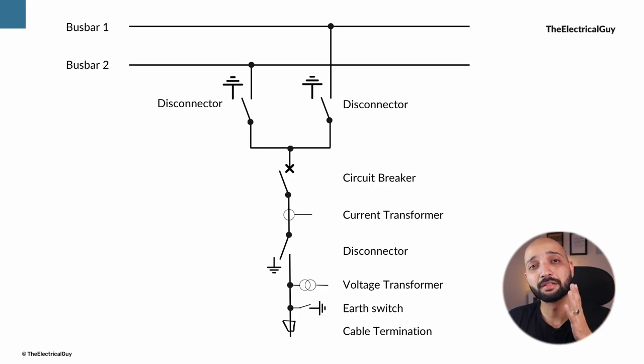A single line diagram is the simplest symbolic representation of an electric power system or a substation circuit arrangement. The single line diagram gives an overview of each circuit arrangement with all the switching and non-switching high-voltage equipment in a substation.